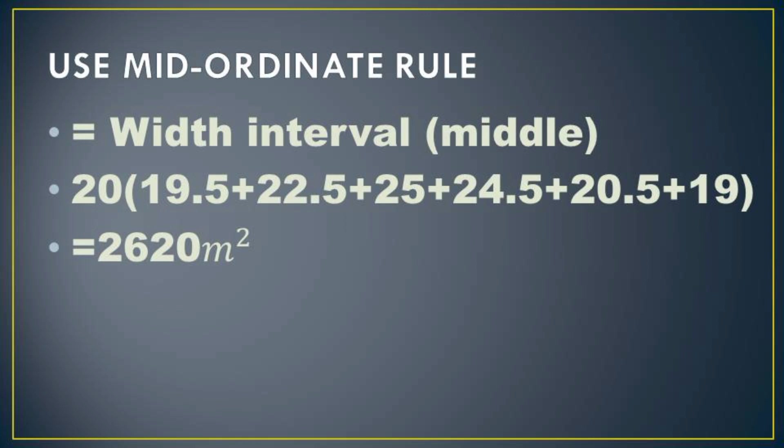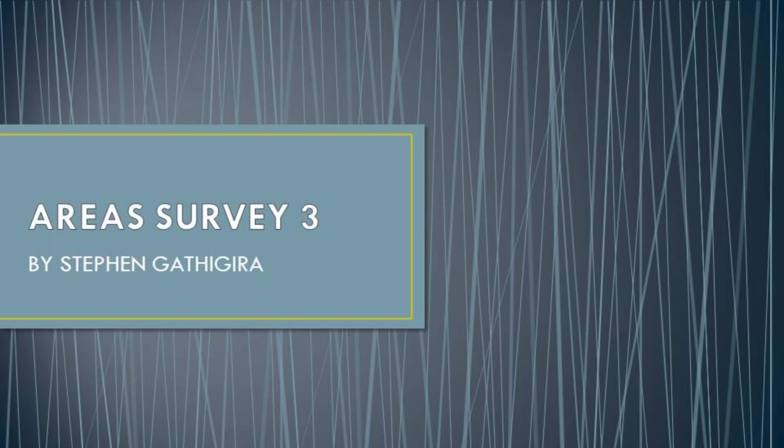So the total sum of the mid-ordinates will be 131 meters multiplied by 20, and our answer will be 2620 meters squared. Just like I said, that is the shortest question I think I will ever come across or ever explain in this topic.